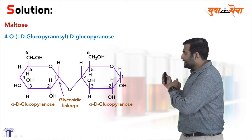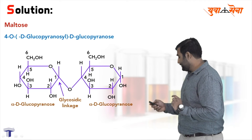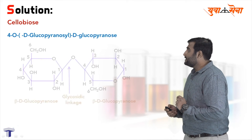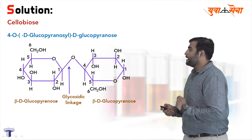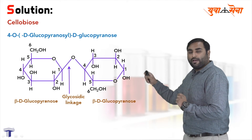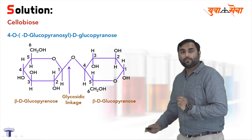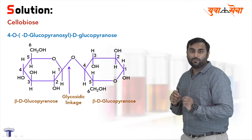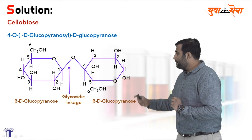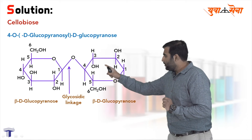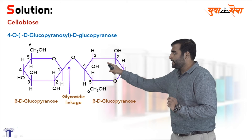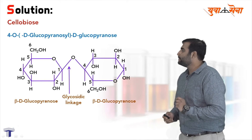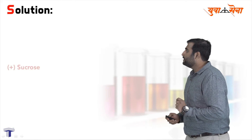So yeh statement correct hai — toh first statement was correct. Let us see the second statement, cellobiose. Cellobiose ka structure dekhayenge — toh yeh 2 beta-D-glucopyranose se juda hua hai, aur yeh bhi carbon 1 aur carbon 4 se glycosidic linkage bana raha hai. Toh yeh bhi statement correct hai.